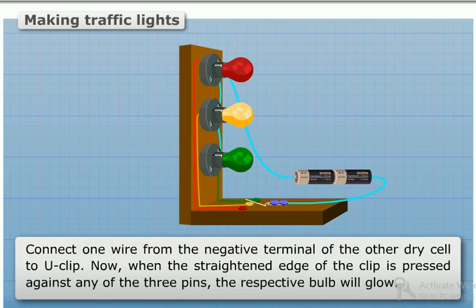Now when the straightened edge of the clip is pressed against any of the three pins, the respective bulb will glow.